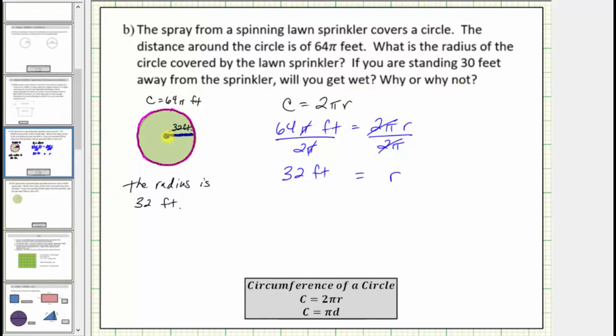So if you are 30 feet from the center of the circle where the sprinkler is, and the radius is 32 feet, notice how you might be here, which should be inside the circle, and therefore you would get wet.